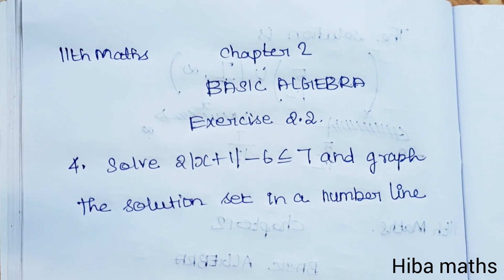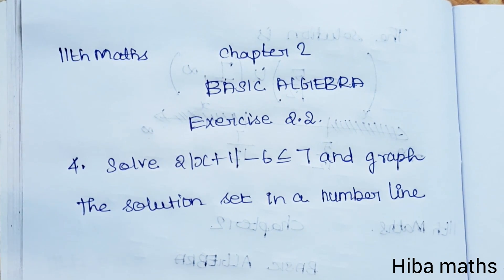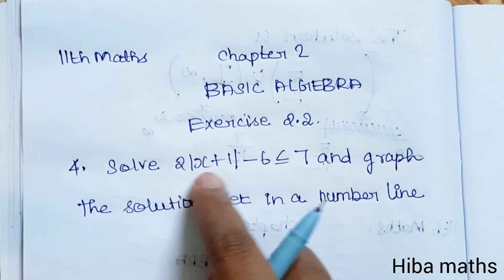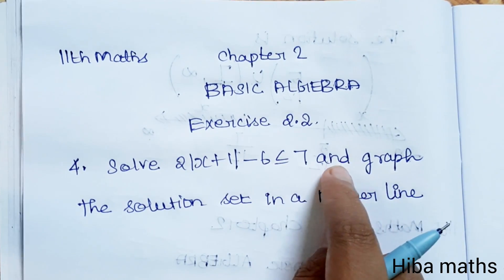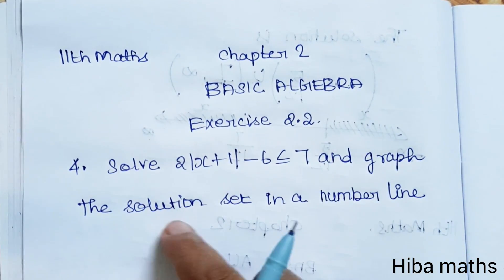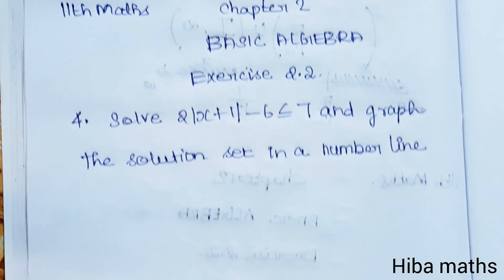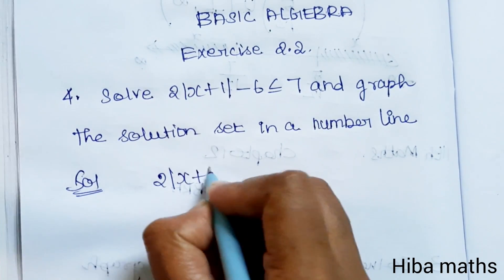Hello students, welcome to HibaMax 11th standard, Chapter 2 Basic Algebra, question 2.2 4th question. Solve 2 into modulus of x plus 1 minus 6 is less than or equal to 7, and graph the solution set in a number line.